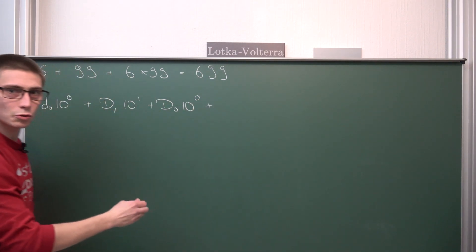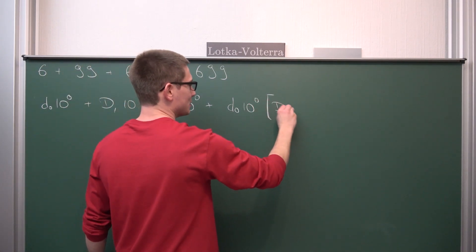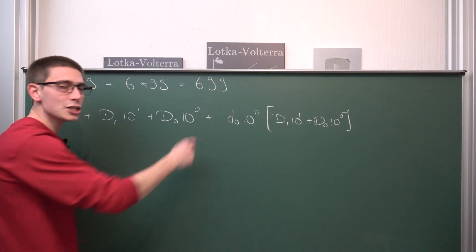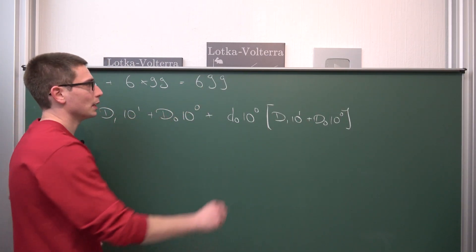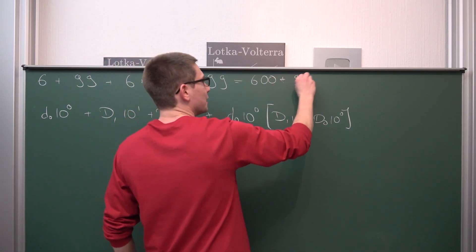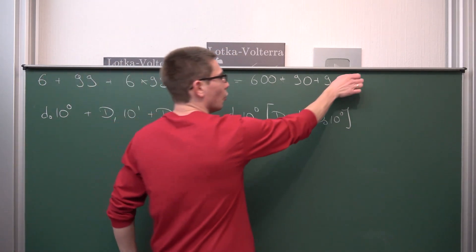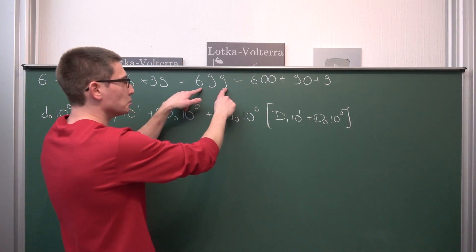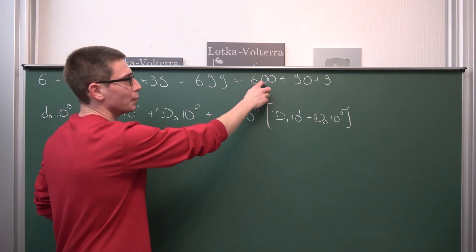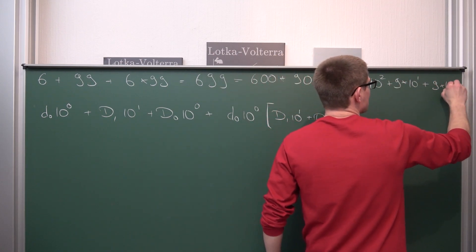Now what about the multiplication? We write out d0 times 10 to the 0 multiplied by d1 times 10 to the first power plus d0 times 10 to the 0. All of this equals the concatenation of the two numbers. The concatenation 699 in base 10 is 600 plus 90 plus 9 — digits multiplied by powers of 10. With three total digits we get a factor of 10 squared at the front. So 699 equals 6 times 10 squared plus 9 times 10 to the first power plus 9 times 10 to the 0, which corresponds to d0 times 10 squared plus d1 times 10 to the first plus d0 times 10 to the 0.